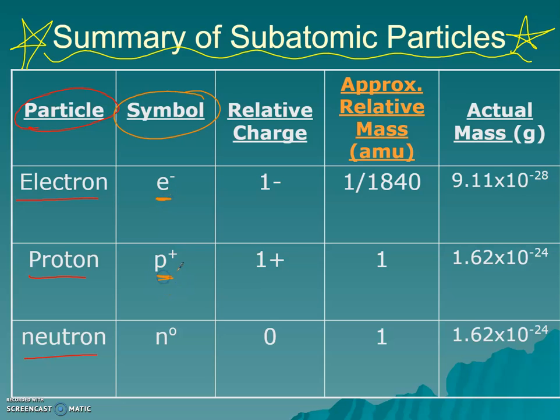Electrons are lowercase e with a negative sign. Protons are lowercase p with a positive sign. Capital P is phosphorus. So you don't want to accidentally make a capital P. N with a little zero sign is neutron. Capital N is going to be nitrogen. Capitalization really matters in chemistry, so please be careful with that.